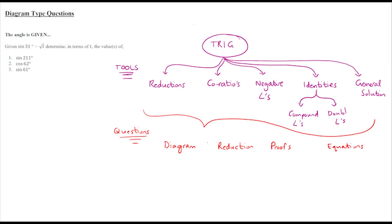In this second video we're going to start looking at the types of questions that we can be asked in our June exams, in our prelims as well as our finals. In video one we looked at the tools — reductions, co-ratios, negative angles, and identities. We'll get to general solutions in the last video, but in this video we're going to start looking at diagram-type questions.